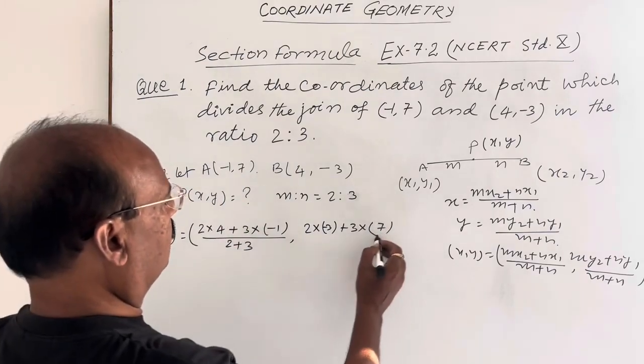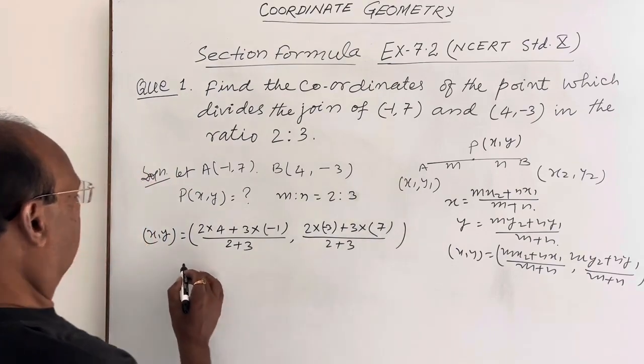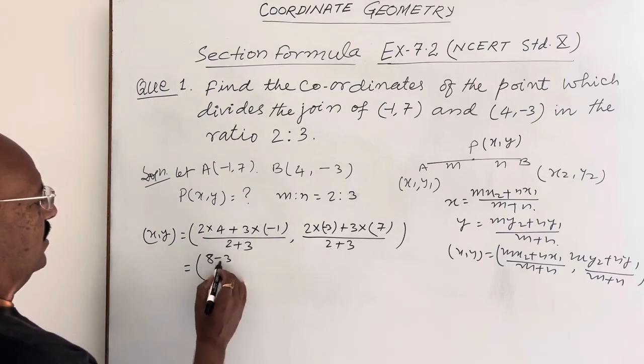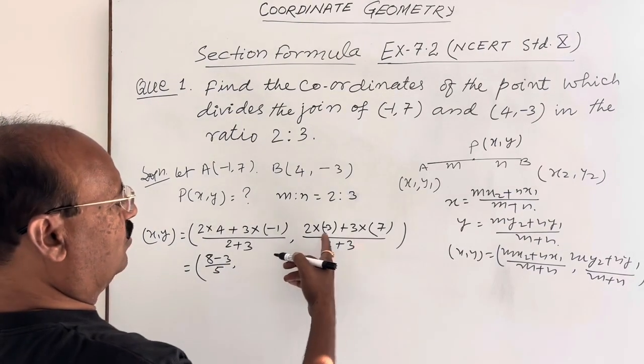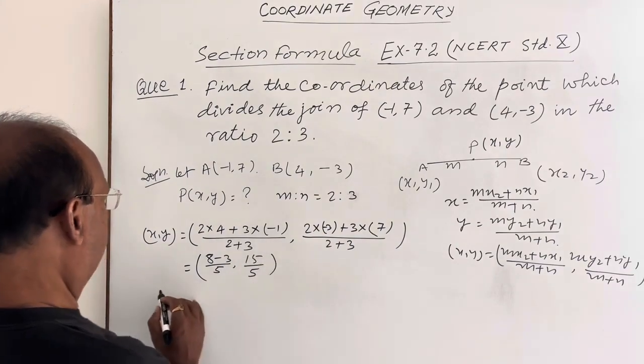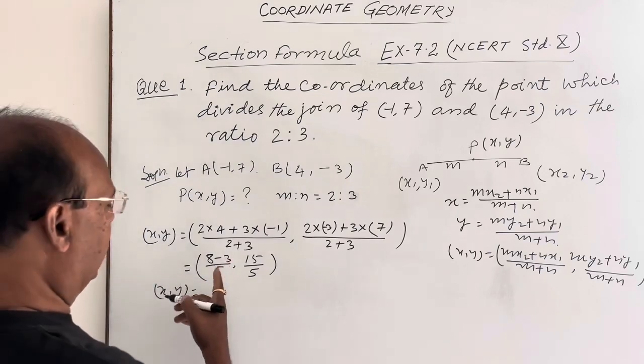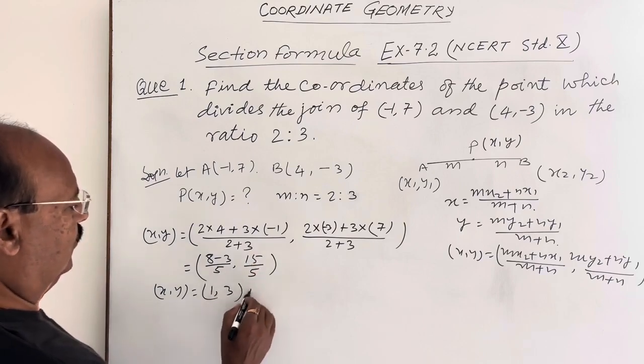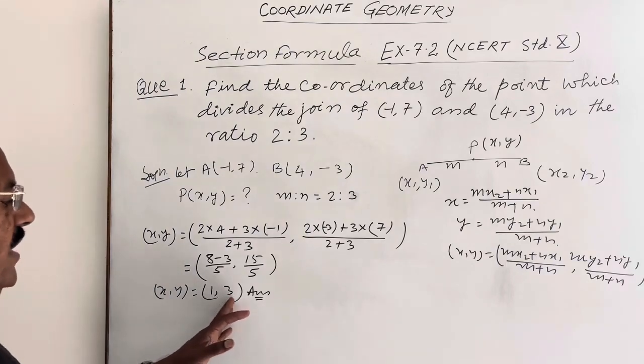And this is equal to, simplifying it, this is (8 - 3)/5 and this is (21 - 6)/5, that is 15/5. So finally we are getting (x,y) equals (8 - 3)/5 is 5/5 which is 1, and 15/5 is 3. So the answer is (1,3). These are the coordinates of the point.